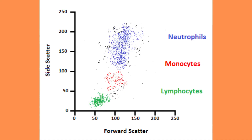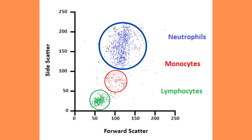By examining this graph a little bit more carefully, we quickly notice that several clusters of cells emerge. By looking at the size and complexity of each cluster, it is possible to determine what kind of cells can be found there.